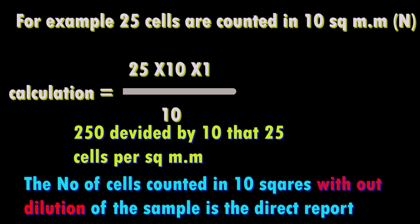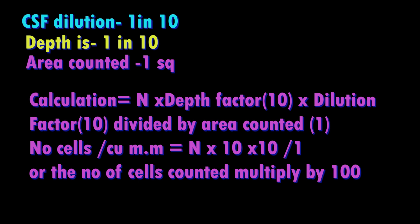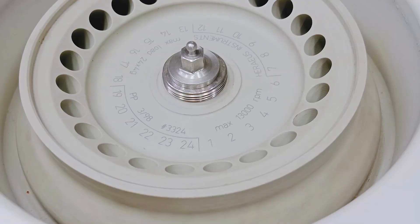If many RBCs are present with no space between them, dilute the sample with WBC counting fluid containing glacial acetic acid, which lyses the RBCs so WBCs can be counted easily. For a 1-in-10 dilution counting one WBC square: calculation = cells counted × depth factor (10) × dilution factor (10) ÷ area counted (1 mm²) = cells counted × 100.